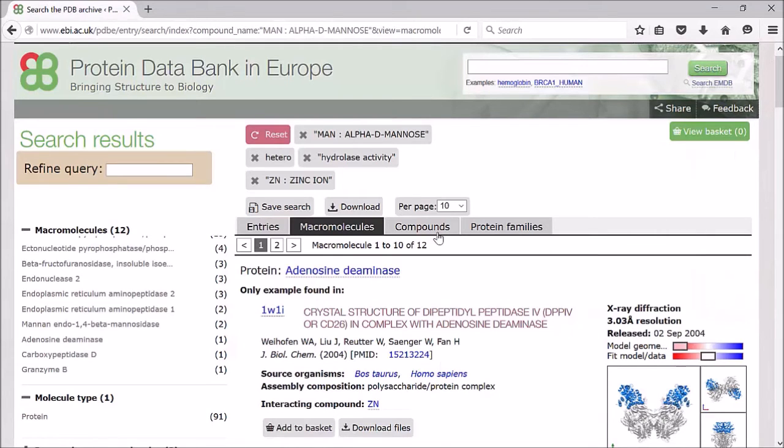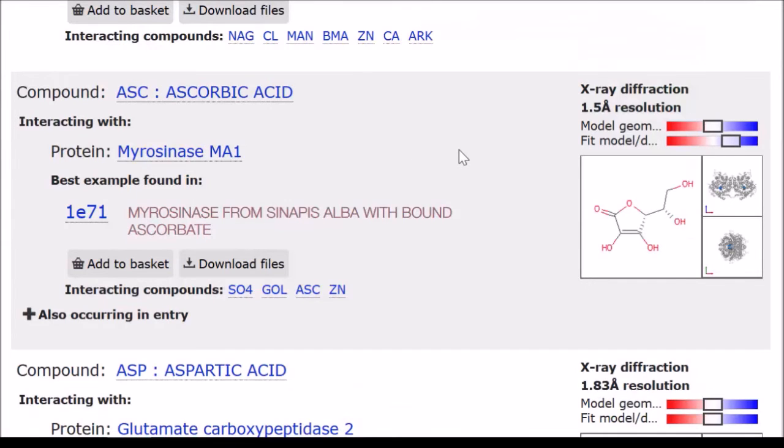There is also a compounds tab, and this lists things by individual ligand. For instance, this is ascorbic acid. Again, we give a best example as well as other examples.